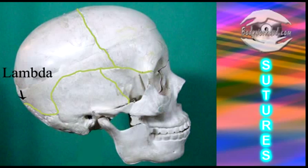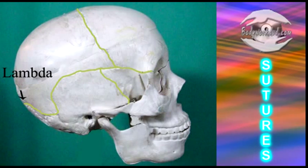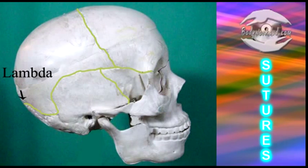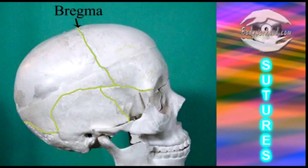This structure is the lambda. It's the junction of the parietal and occipital bones, where the coronal and lambdoidal sutures meet.